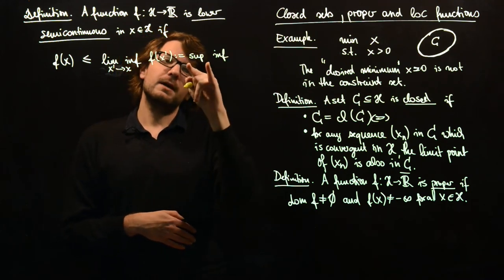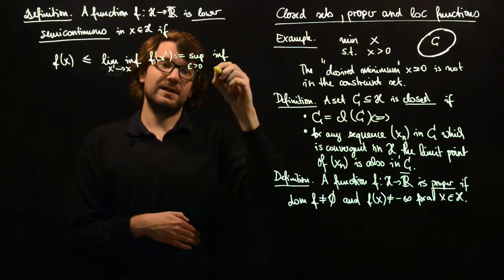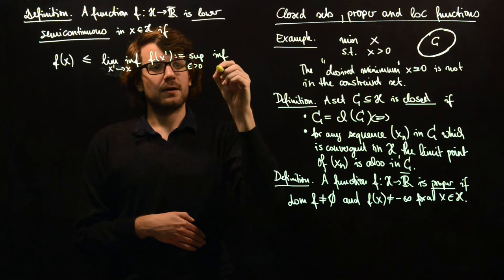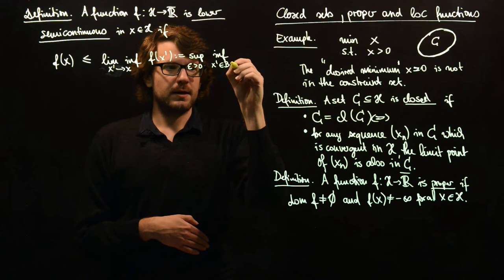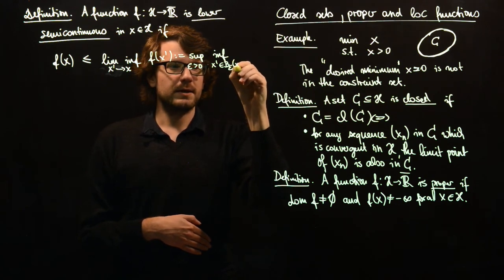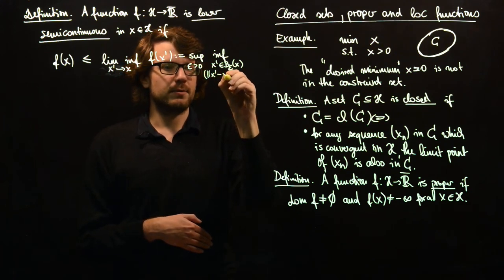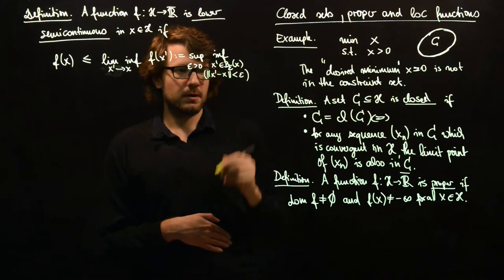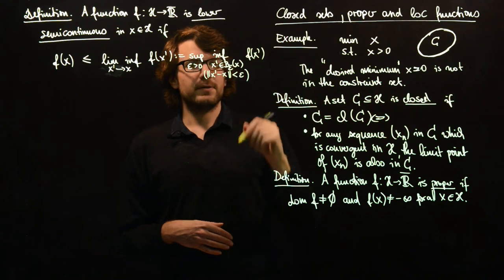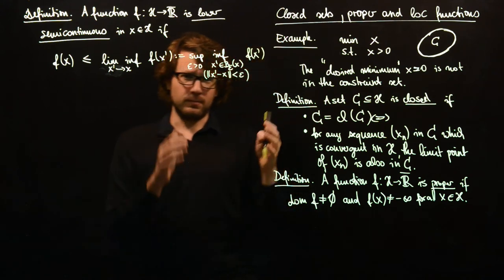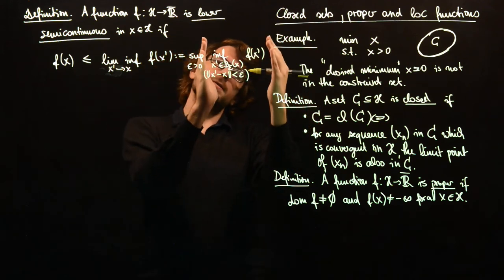What we take here is we take the supremum overall neighborhoods of the lowest value within this neighborhood. So x prime in the epsilon ball around x, which means that norm of x prime minus x is less than epsilon. Then we take f of x prime where x prime is in this ball.